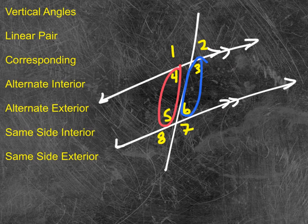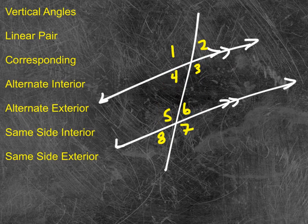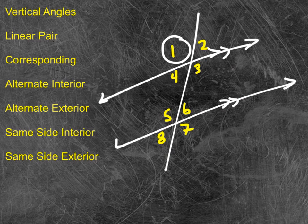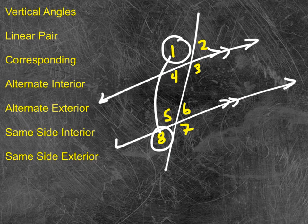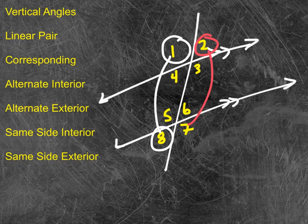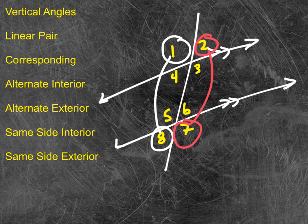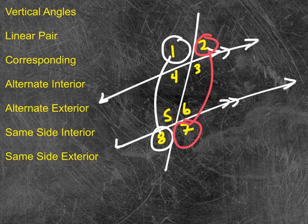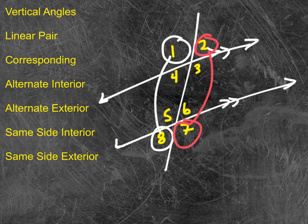Finally, the same kind of relationship. We would be looking at the same side and exterior. So 1 and 8, as well as 2 and 7. They're on the same side in the exterior. They also sum to 180. So a quick little recap here.